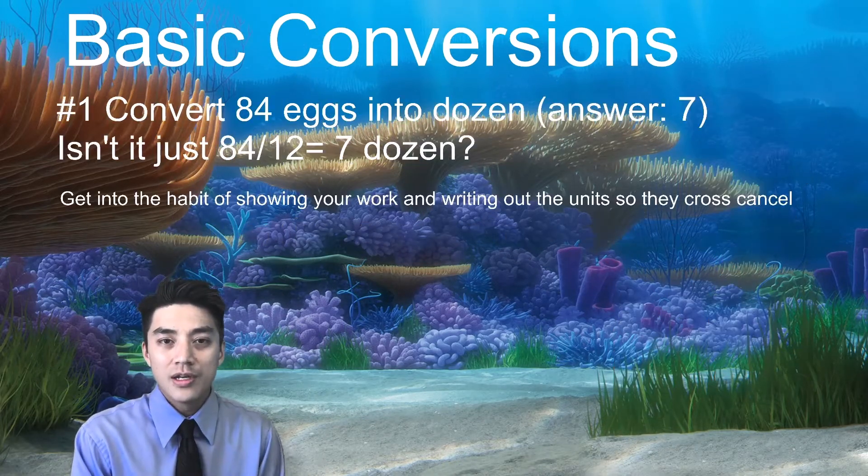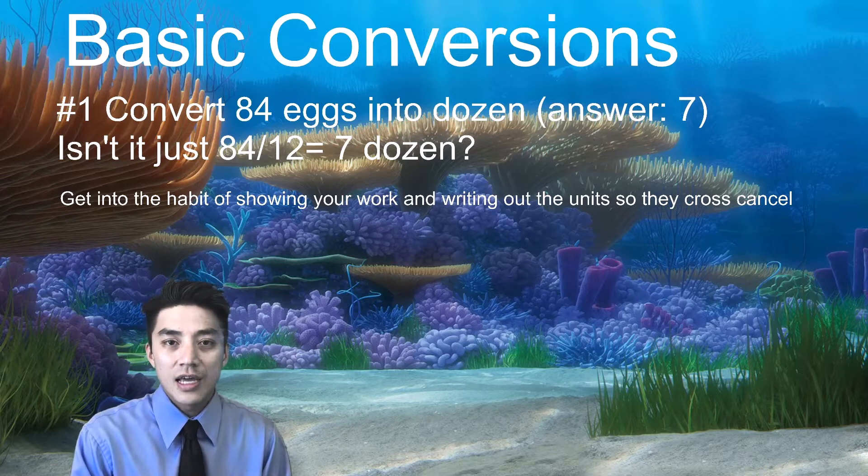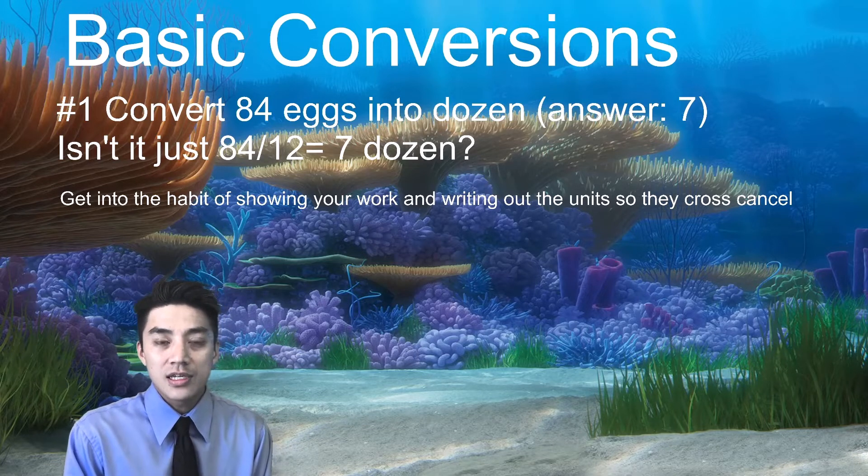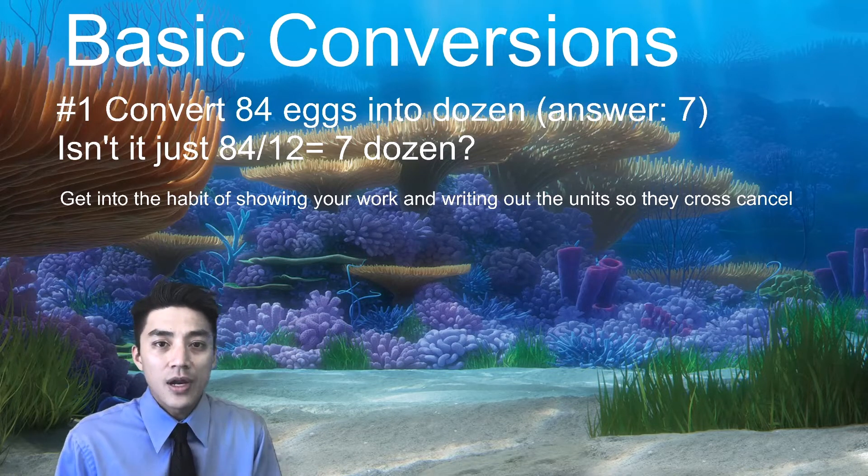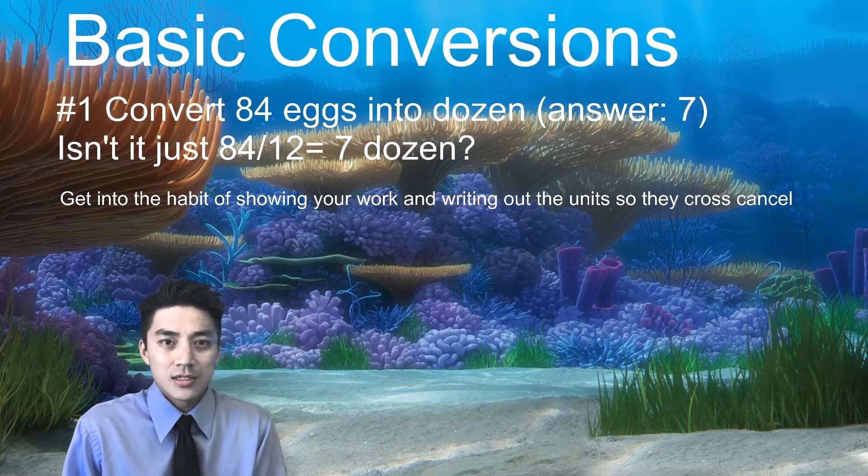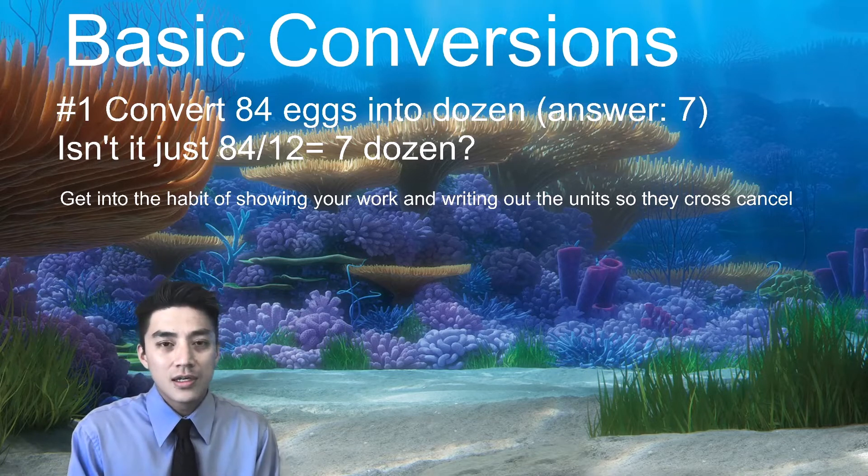Problem number one. Convert 84 eggs to dozen. The answers are all provided on my notes as the number in the parentheses. In this case, the answer is 7. And then many of you will point out, well, Mr. Nguyen, this is quite easy. Isn't it just 84 divided by 12? That gives you 7. Yeah, you're right.